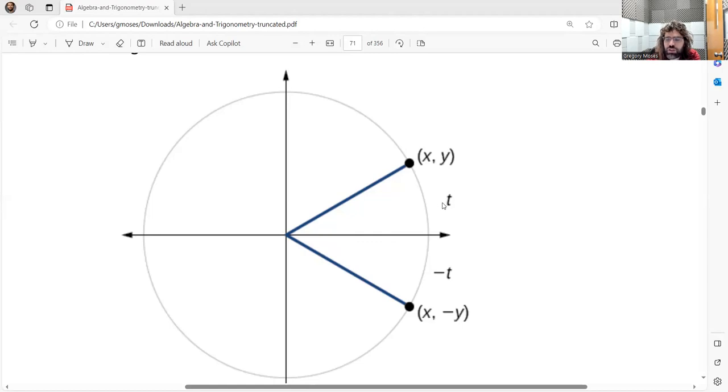The textbook is using t instead of x, because it wants to use x for the x-coordinate, which I guess makes sense. So, here's t, and here's negative t, and you see these x-coordinates are the same, and these y-coordinates are the same, except for a negative sign.